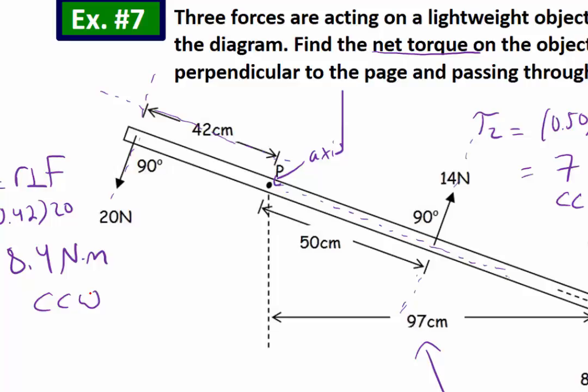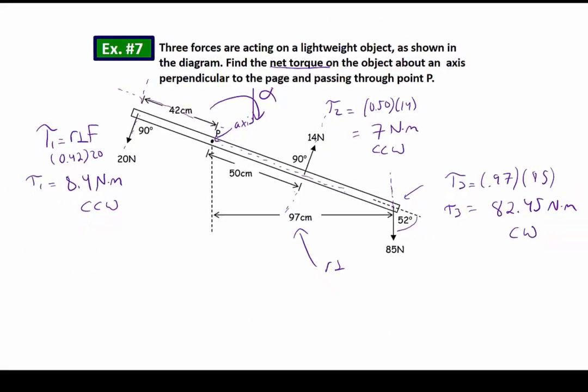So it looks like the clear winner here is going to be clockwise. It's got about 82 meters, and the other ones are much smaller. So that means that I am going to decide which direction my object is going to angularly accelerate, and that's going to be clockwise. So I'm going to make clockwise the positive direction.